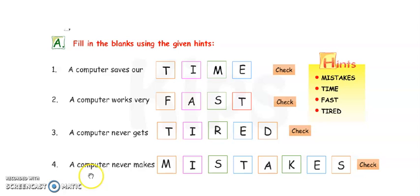Next, question number 4. Computer never makes mistakes. M is written. Write I, then S is written. Write T, A, and K is written. And this is E and S here. Mistake. M-I-S-T-A-K-E-S. Mistakes.